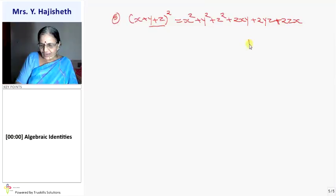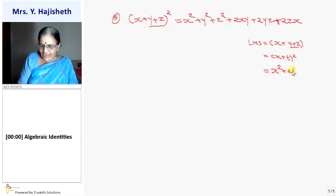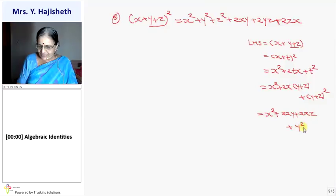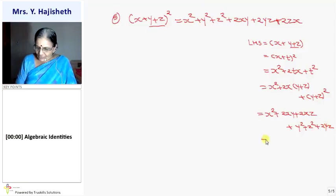I can derive this formula by keeping y plus z as t. Starting from the LHS, taking y plus z as t, it becomes x plus t whole square, which equals x squared plus 2tx plus t squared. Now replacing t with y plus z: x squared plus 2xy plus 2xz, plus y squared plus z squared plus 2yz. So automatically we get x squared plus y squared plus z squared plus 2xy plus 2yz plus 2zx.